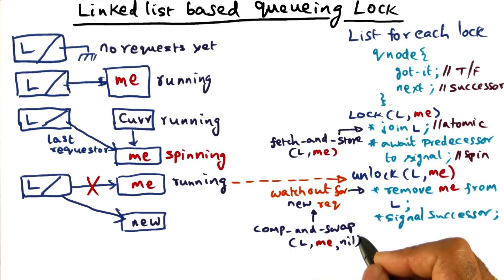So this compare-and-swap instruction is going to return true if it found that L and me, the first two arguments, were the same, and therefore it set L to the third argument. In that case it's a success, and success is indicated by a true being returned by this operation.